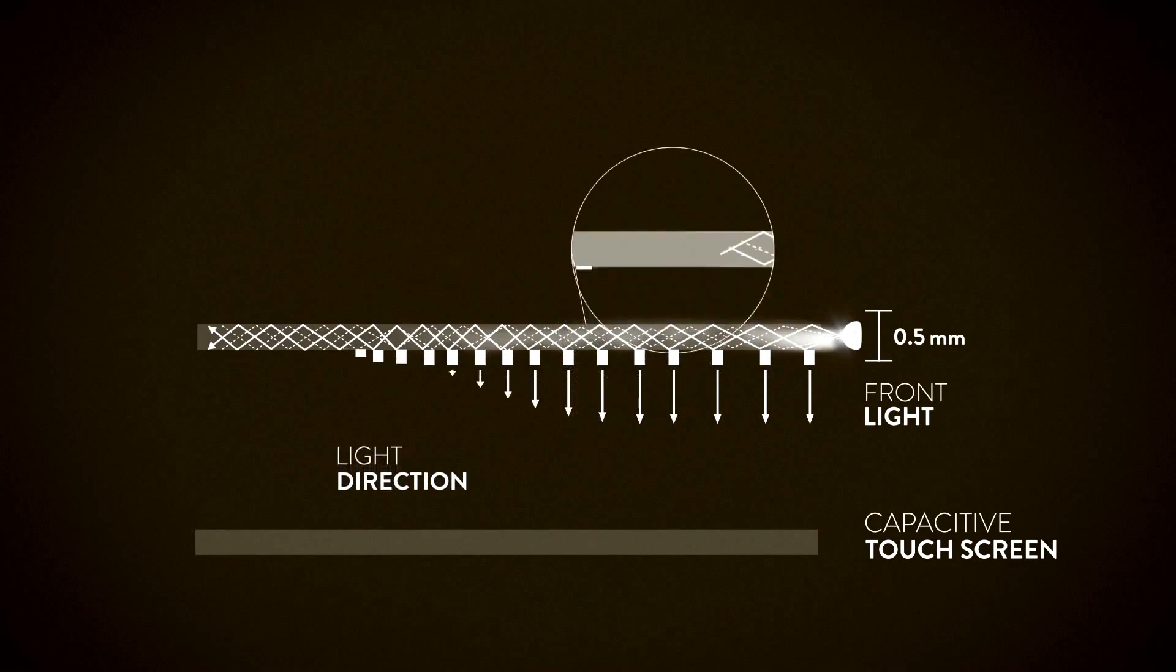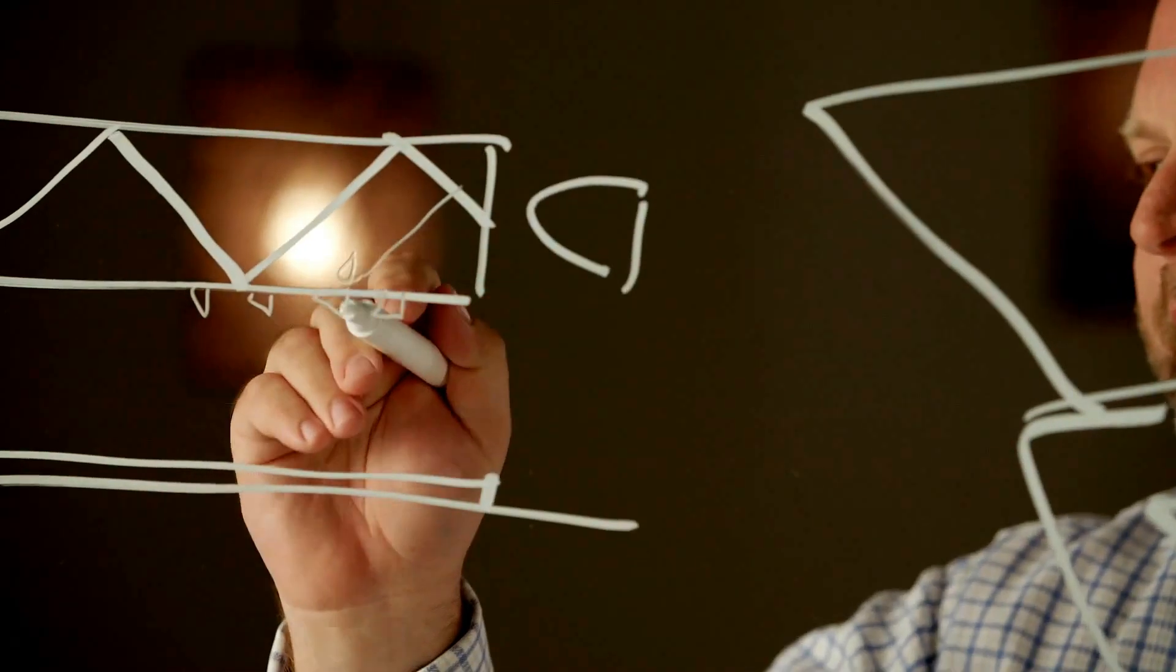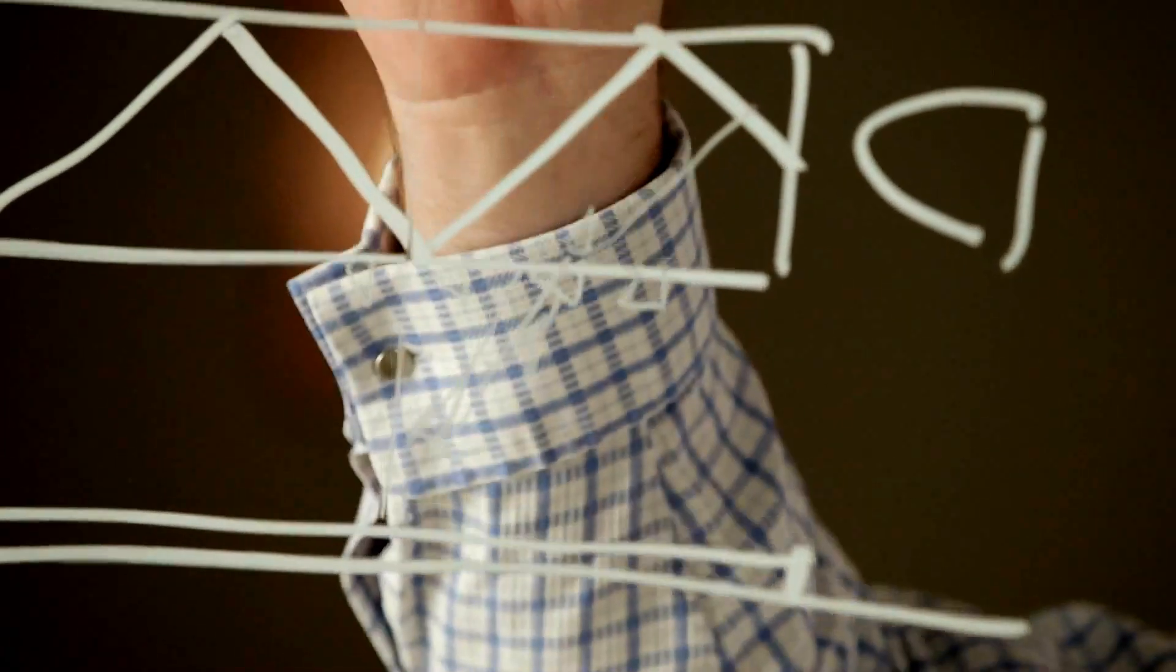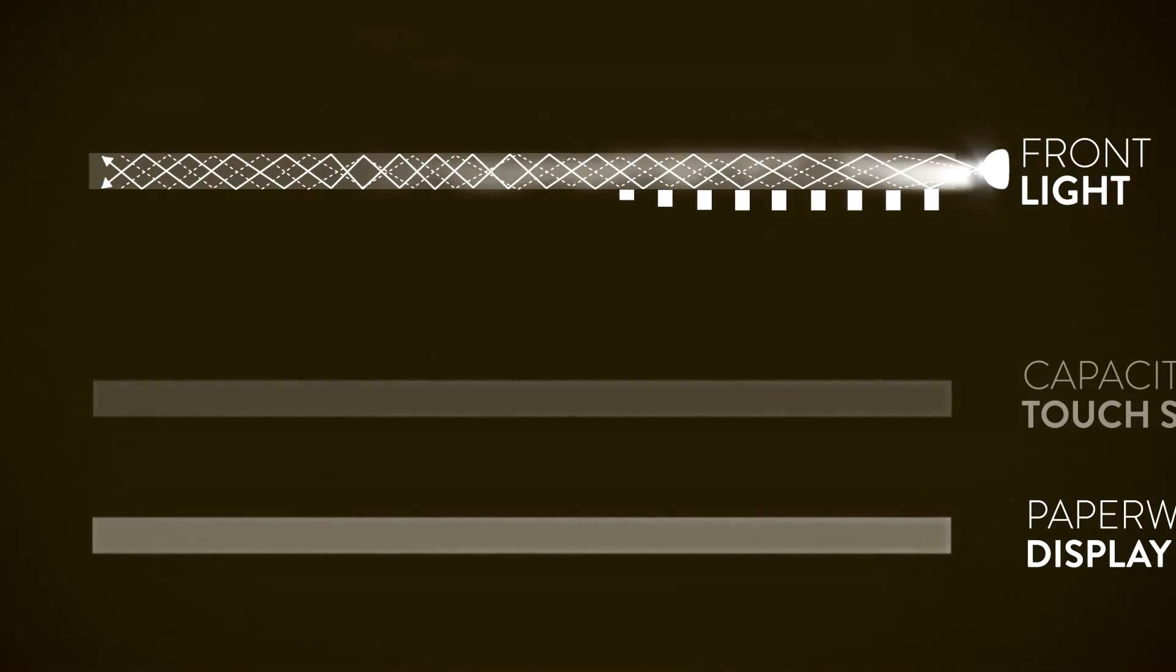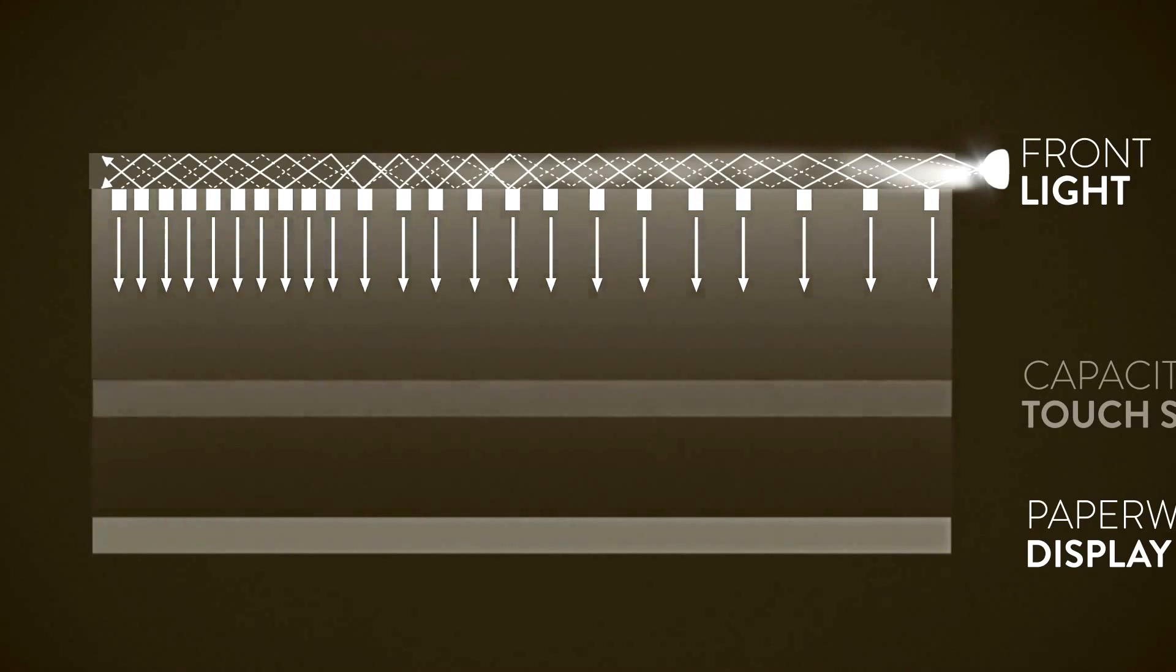The magic of the technology is that by printing features in different places, it comes out and shines off the display, and then from the display it reflects back up. So by adjusting the pattern as you go from one end of the display to the other, you can get an even amount of light coming out at every location. It's actually very hard.